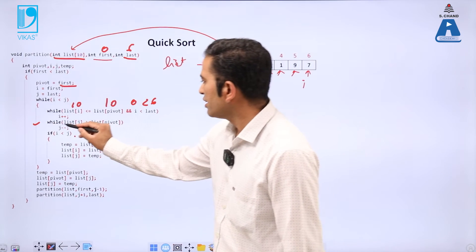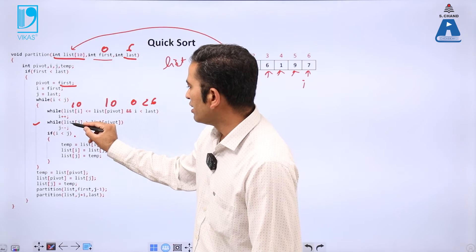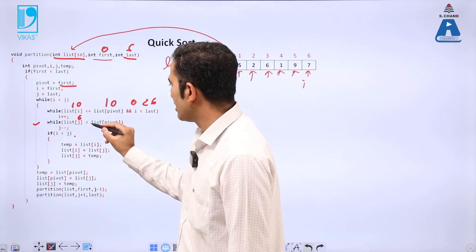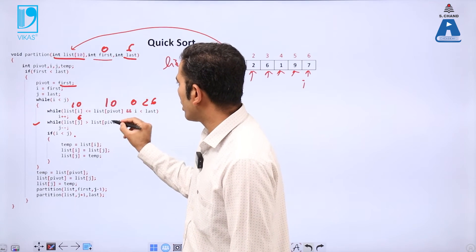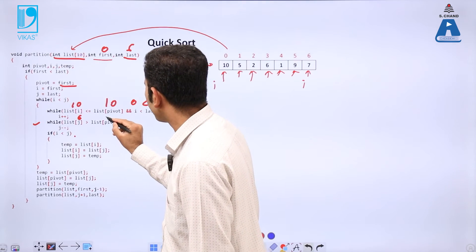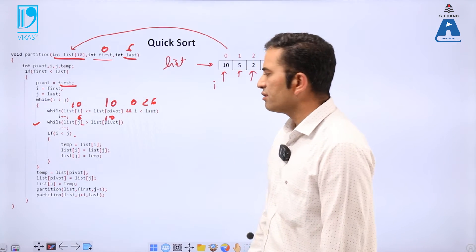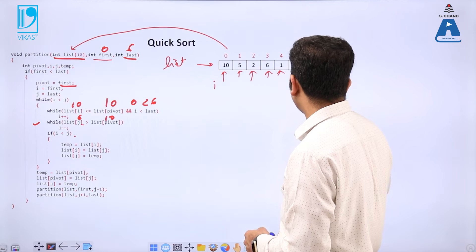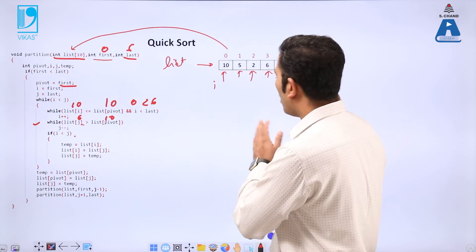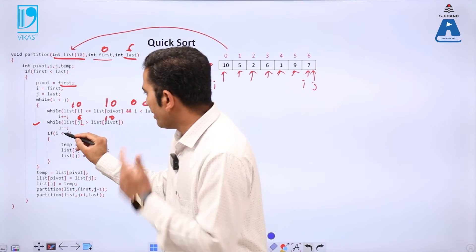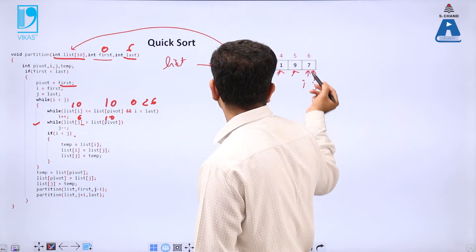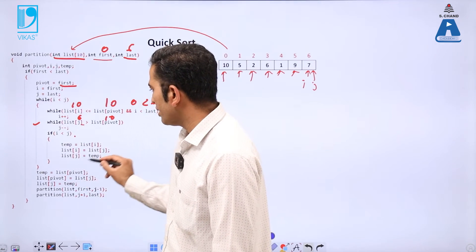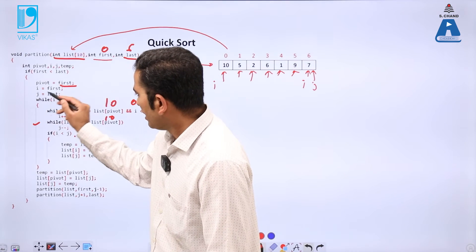In the second while loop, j is 6 so list[6] = 7. We check if 7 is greater than list[pivot] (10) — condition is false, so there is no decrement of j. So j remains at position 6, and i is also at position 6 now. Since i is not less than j, the condition is false and we do not enter the inner if block.